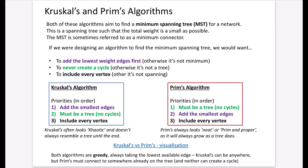By looking at them simultaneously, you'll see the similarities and differences, which should make it easier to remember the difference between them. Both algorithms aim to find a minimum spanning tree for a network, often referred to as MST. A spanning tree such that the total weight is as small as possible — sometimes the MST is called a minimum connector because it's the smallest way to connect all the vertices in a network.